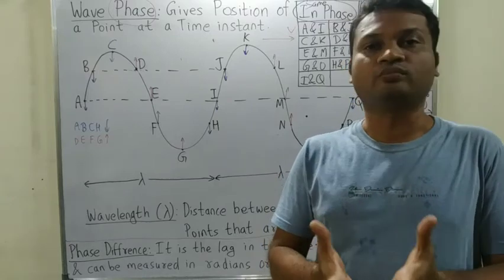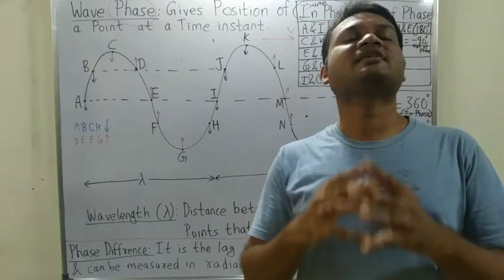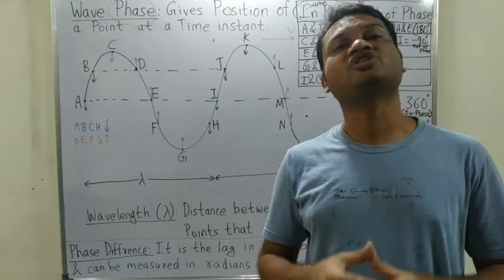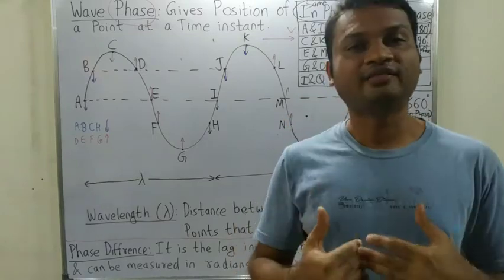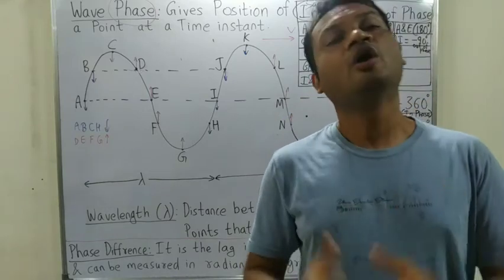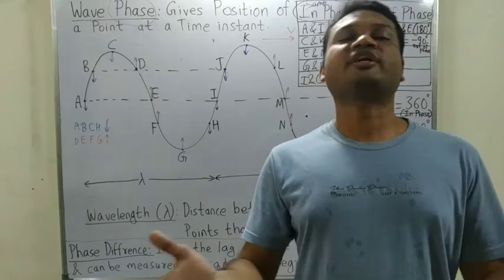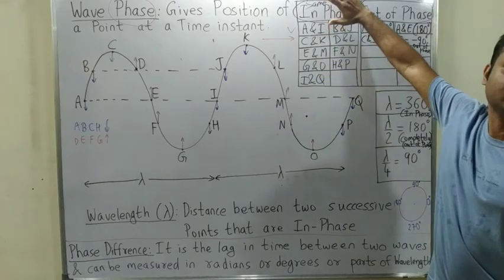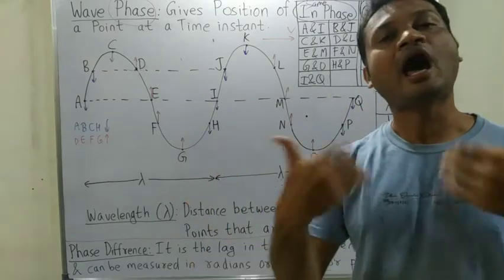Out of phase — we can say A and B are out of phase. Out of phase means they are not in phase. It's like saying if you are not my friend, you could be an acquaintance or a stranger. Similarly, out of phase means those particles which are not in phase. A and I are in phase, but A and B are out of phase.